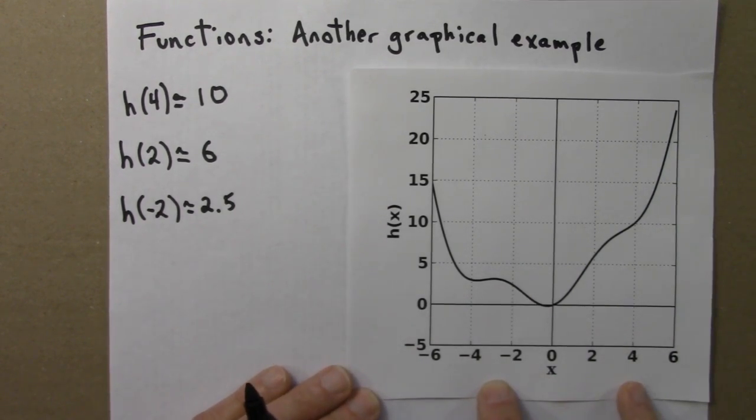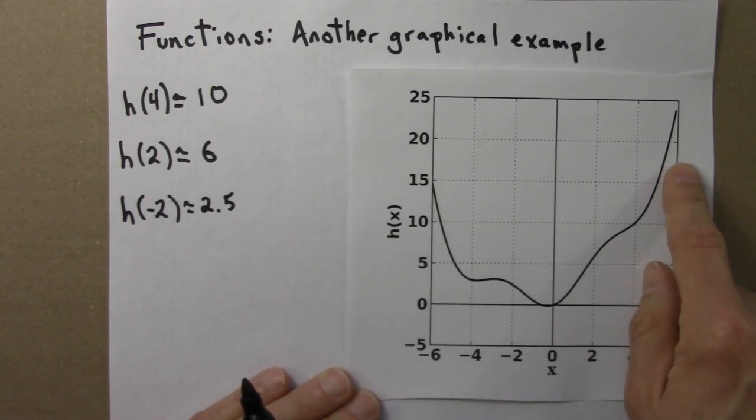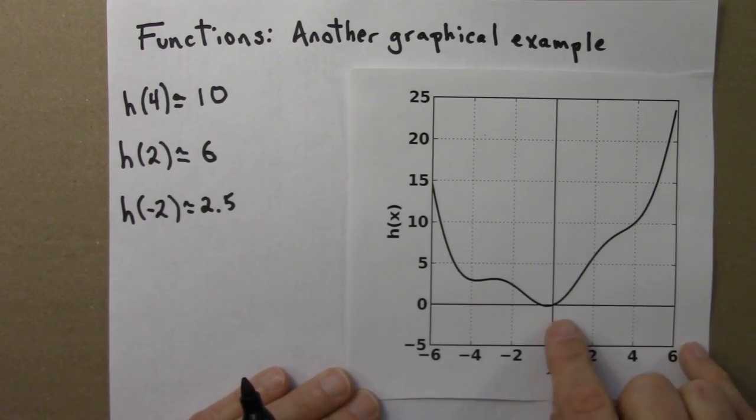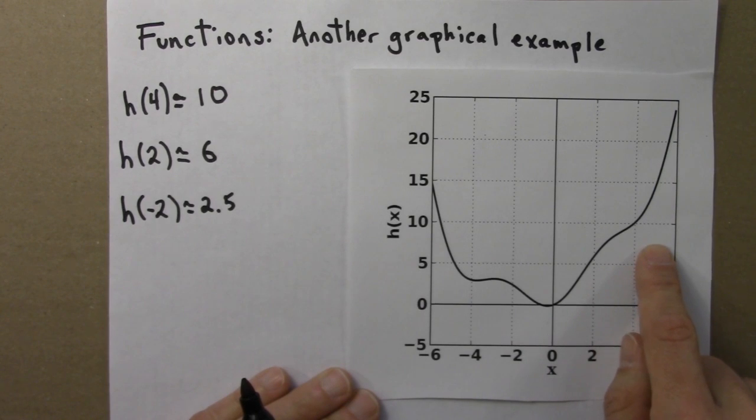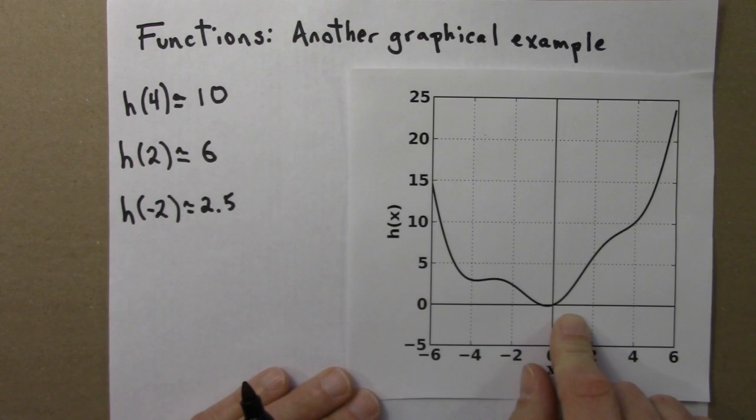So to summarize, we can represent a function with words or an equation, or with a graph, and all three are equivalent. Specifying the graph of a function is the same as giving a formula. You can figure everything out from the graph that you could from the formula. Often, though, working with a graph is much easier, and we'll do that a bunch in both this unit and next.